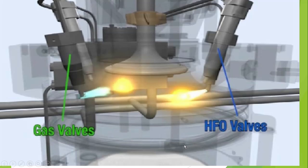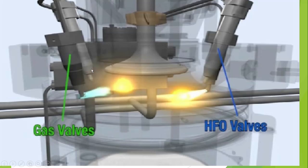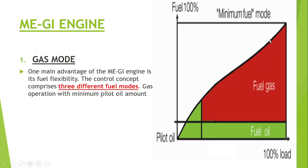In gas mode, when the piston is coming to TDC and the air is being compressed, at that time this pilot fuel is getting injected. When the pilot fuel is injected, it creates a temperature which is suitable for the gas to ignite when it is injected. We need this pilot fuel because the gas fuel has an auto-ignition temperature slightly higher than what can be achieved by compression alone. So by injecting pilot fuel, we create an atmospheric temperature sufficient enough for the gas to ignite. Therefore only a small amount of pilot fuel is needed — this mode is called gas mode.